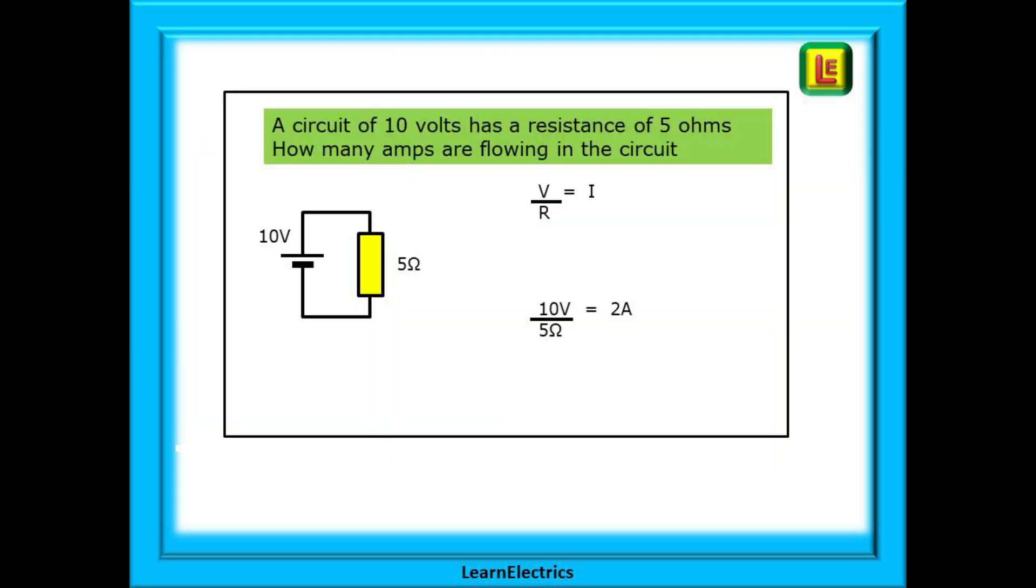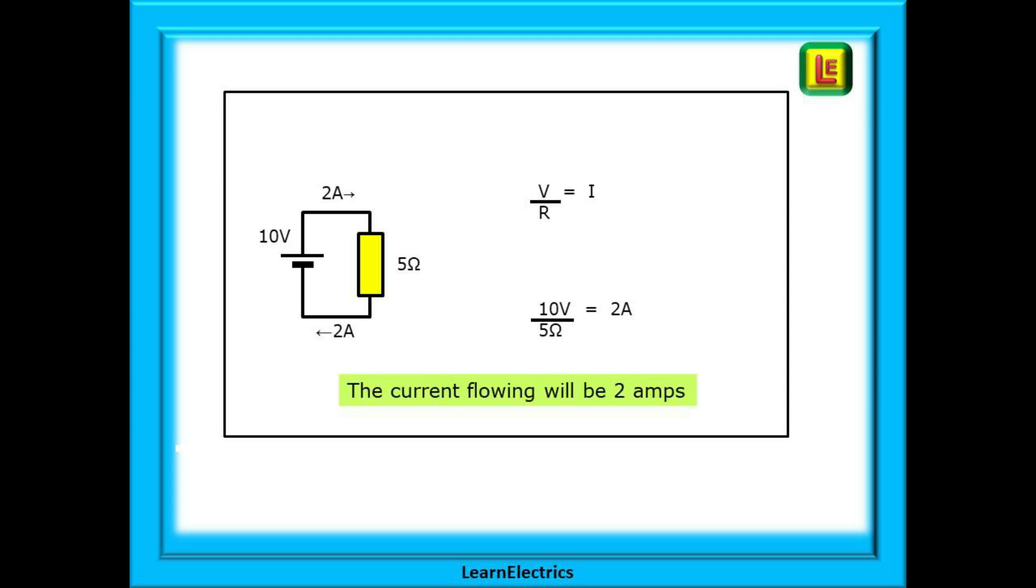If we have a circuit of 10 volts and a resistance of 5 ohms, how many amps of current are flowing in this circuit? Remember that voltage over resistance gives us the current. 10 volts divided by 5 ohms will give 2 amps of current.